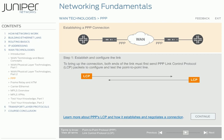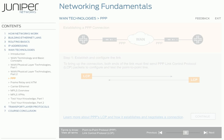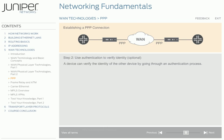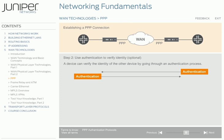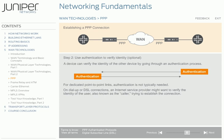During the second step, a device can verify the identity of the other device by going through an authentication process. This step is optional. PPP was designed to work over a variety of links, such as dedicated point-to-point links, dial-up connections, and digital subscriber line, or DSL connections. For dedicated point-to-point links, authentication is not typically needed. On dial-up or DSL connections, an Internet service provider might want to verify the identity of the user trying to establish a connection. If the devices agree to perform authentication, a series of authentication messages are sent to verify the caller. If authentication fails, PPP shuts down or terminates the link. If authentication is successful, the devices move on to the next step, NCP.